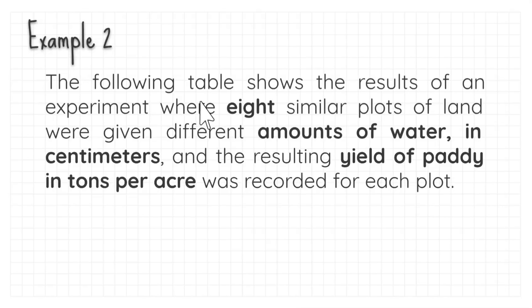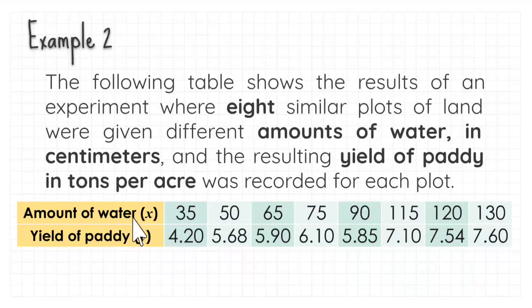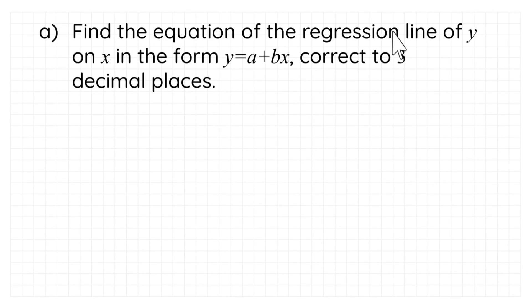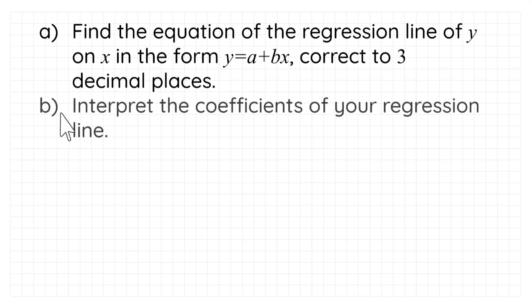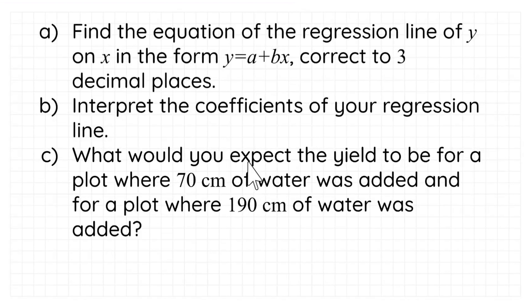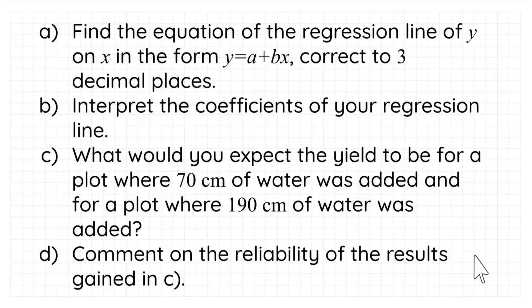Example two: the following table shows the result of an experiment where eight similar plots of land were given different amounts of water in centimeters, and the resulting yield of paddy in tons per acre was recorded for each plot. The questions are: find the regression line of y on x to three decimal places; interpret the coefficients; estimate the yield for 70 cm and 190 cm of water added; and comment on the reliability of results.